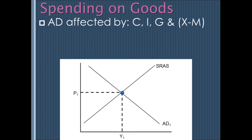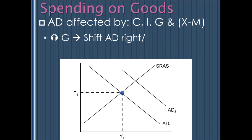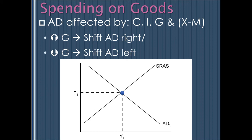When we talk about spending on goods, we're talking about affecting aggregate demand because G is one of its components. Government spending influences overall aggregate demand, so if the government increases its spending, that should shift aggregate demand to the right, creating a new equilibrium at higher output and higher prices. G includes things like police cars, helicopters, schools, and bridges. If the government decreases spending, we see a left shift in aggregate demand and a reduction in price and output.